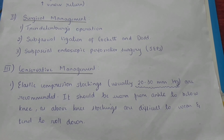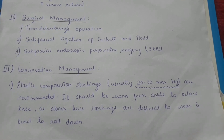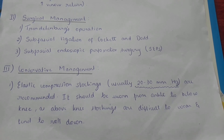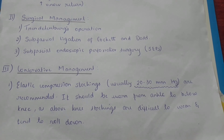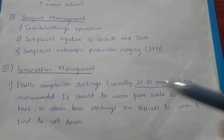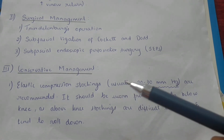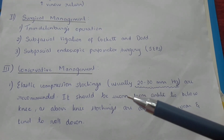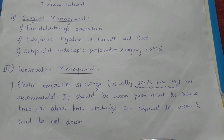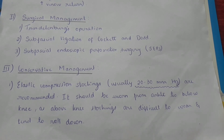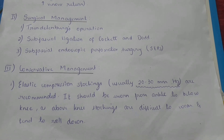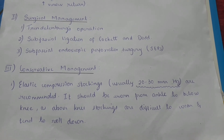An important note: compression stockings are different from normal tight corsets or stockings. Tight jeans and corsets were considered a risk factor because they apply equal pressure over the entire lower limb. In contrast, compression stockings have maximum pressure at the distal end — at the calf or malleolus region — and as you move proximally toward the knee and thigh, the pressure decreases, producing a pumping effect at the level of the calf muscle.